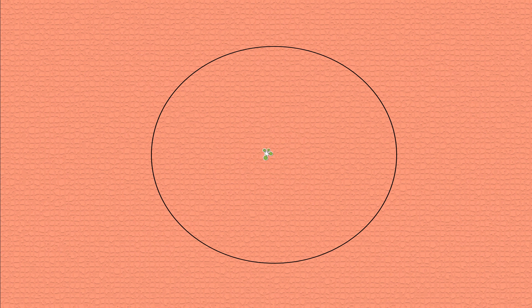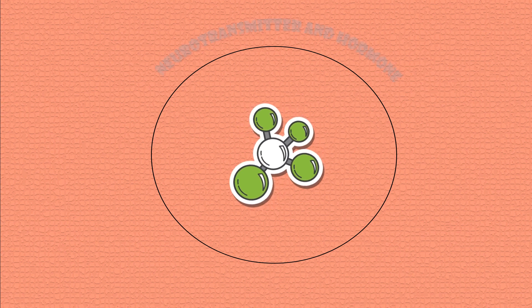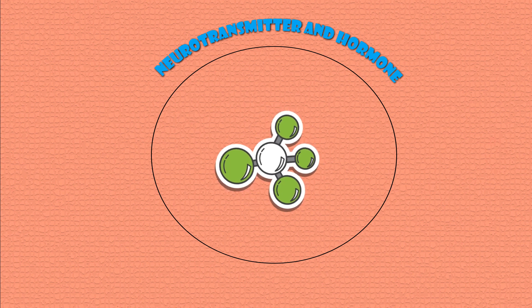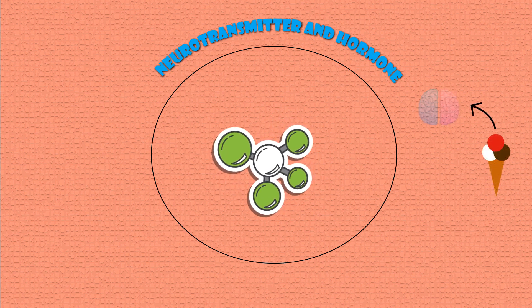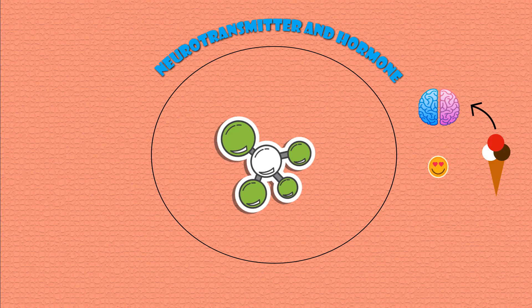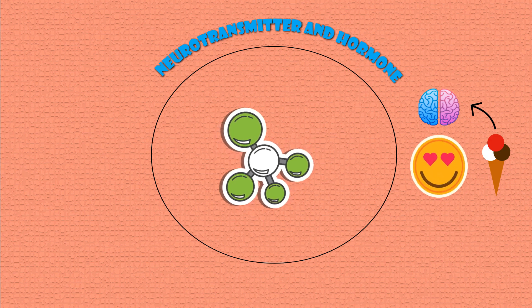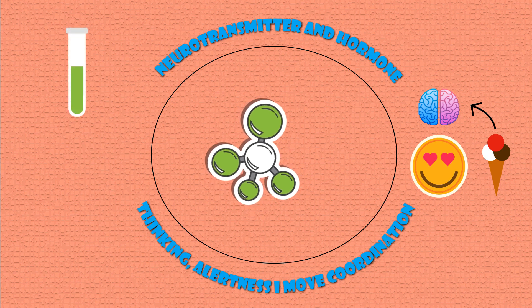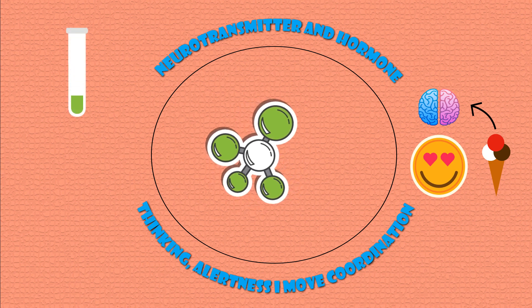Then the other main neurotransmitter, dopamine. Popularly labeled as the 'hormone of pleasure,' it is also a very important chemical that can work both as a neurotransmitter and as a hormone. Its main function is in motivation. Release of dopamine creates a feeling of pleasure that functions as a reward for achieving goals. Dopamine also influences thinking, alertness, and mood coordination.